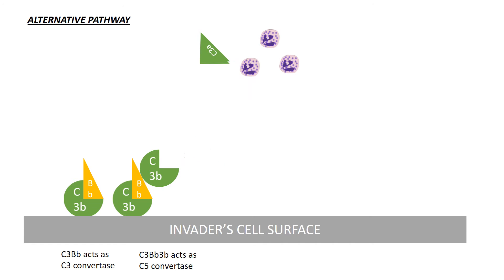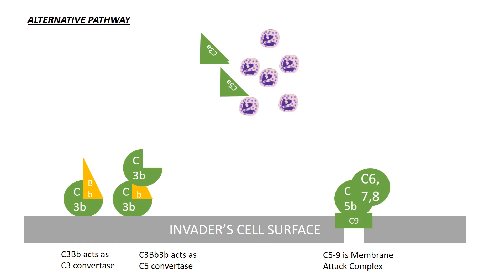C3BBB together with another C3B molecule acts as C5 convertase which cleaves C5. C5B together with C6, C7, C8, and C9 forms MAC, which makes a hole in the cell wall. Inactivated C3B acts as an opsonin.